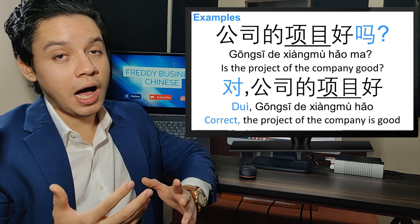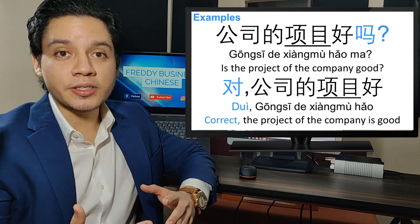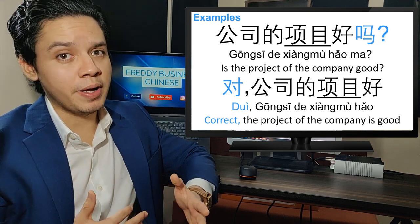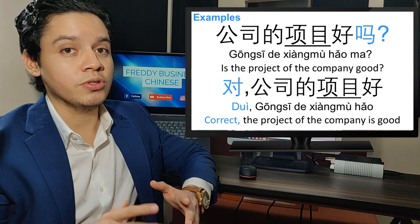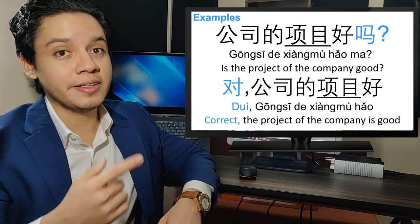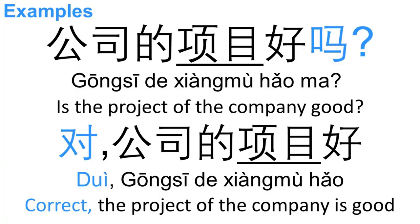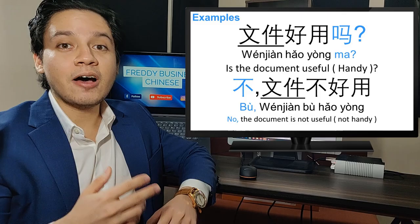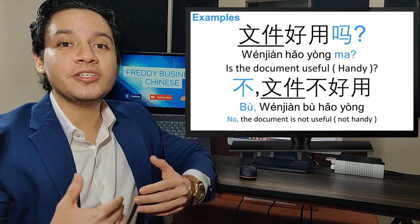Another example: 公司的项目好吗? — Is the project of the company good? We put 吗 at the end. The answer is: 对，公司的项目好 — correct, the project of the company is good.